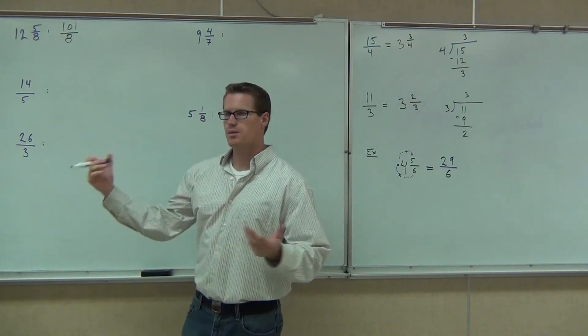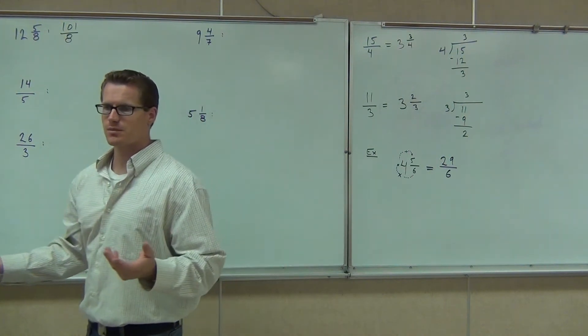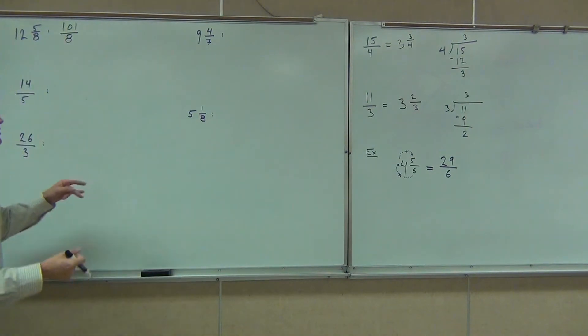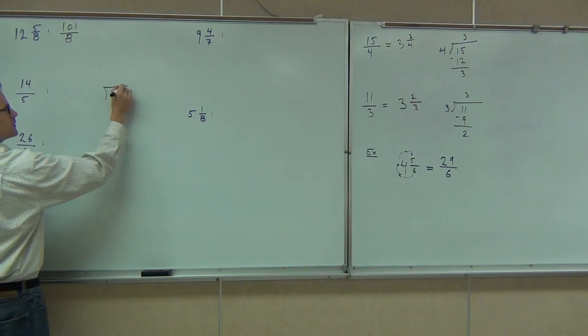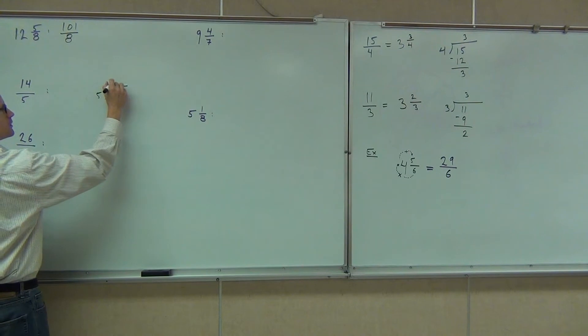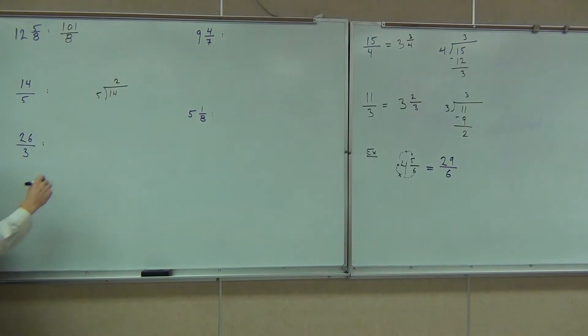Now the next one, I've given you an improper fraction, so 14 over 5. That's improper, we're going to change that into a mixed number by dividing. So 5 goes into 14 two times, we'll get 10, subtract we get 4.